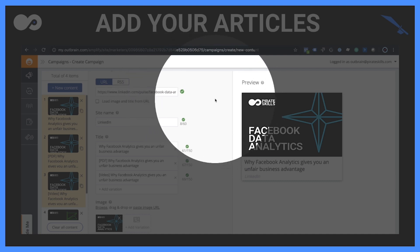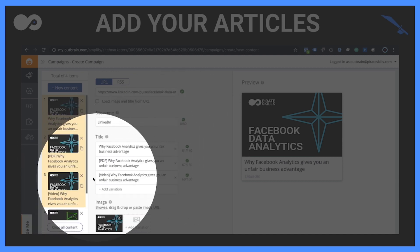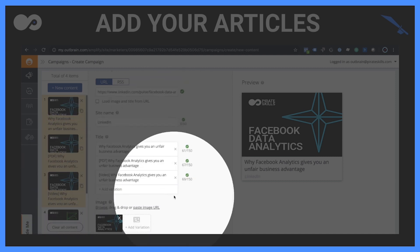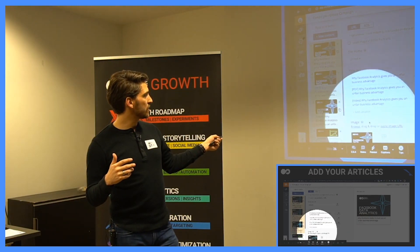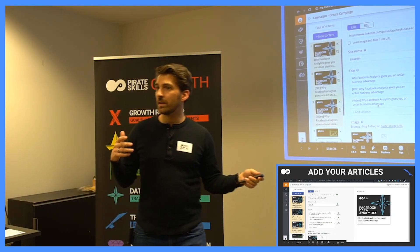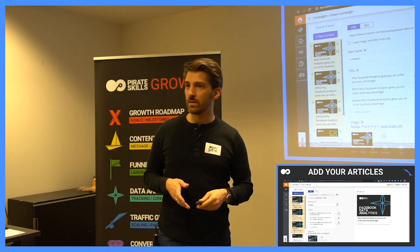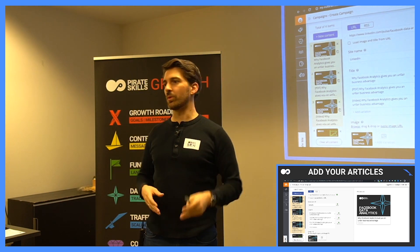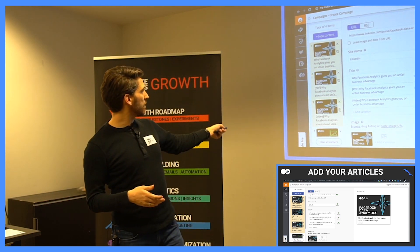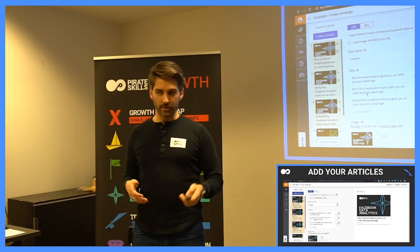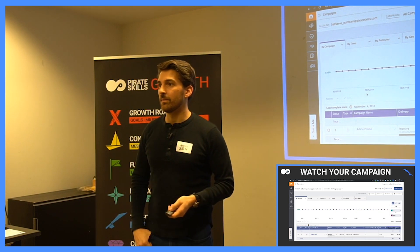Once you enter the article URL — in this case I chose a LinkedIn article — Outbrain suggests the site name and title automatically. You can add several titles and they'll be A/B tested for you. Then you choose an image, ideally four-by-three aspect ratio, though some platforms prefer square. That uploads four pieces of content and you press start — you're done.